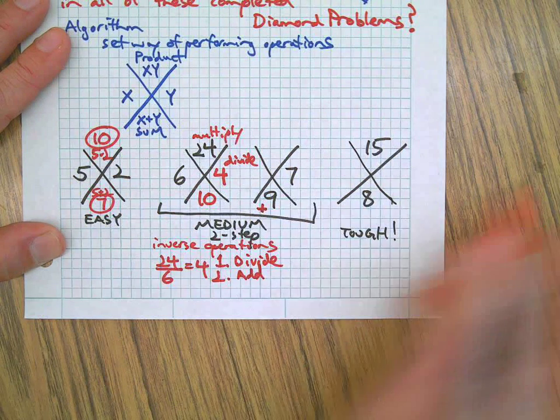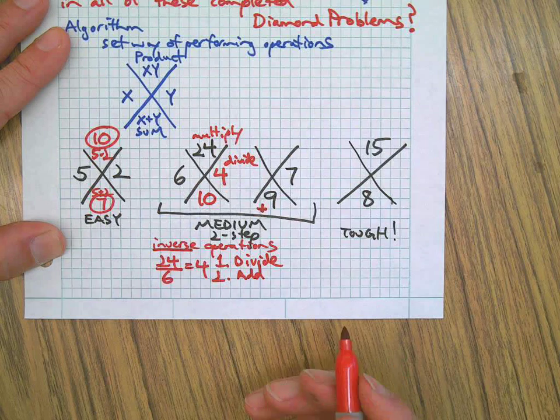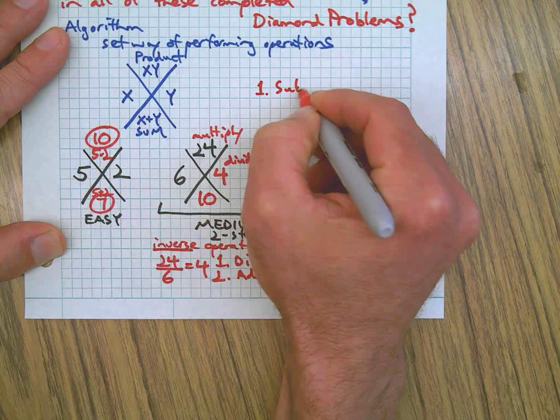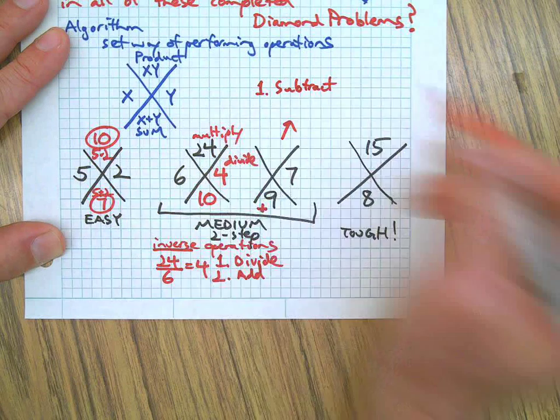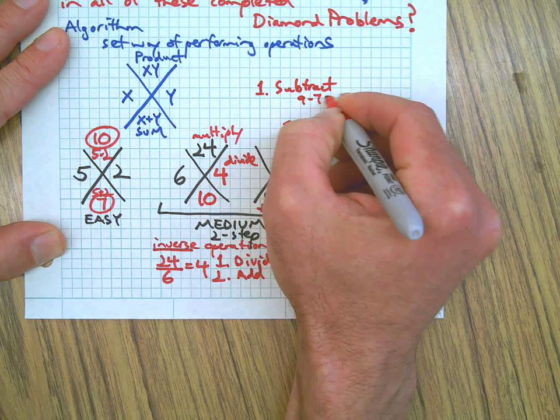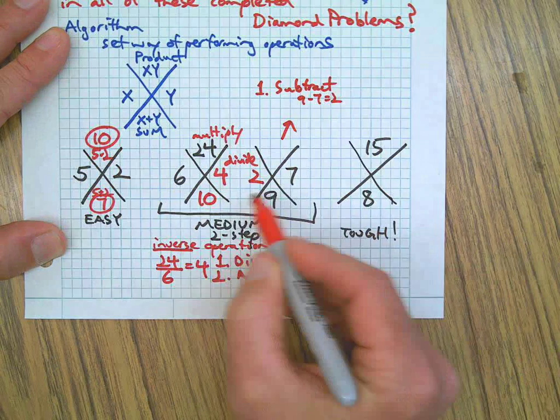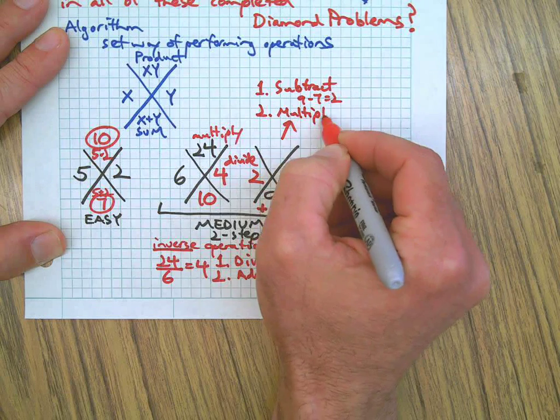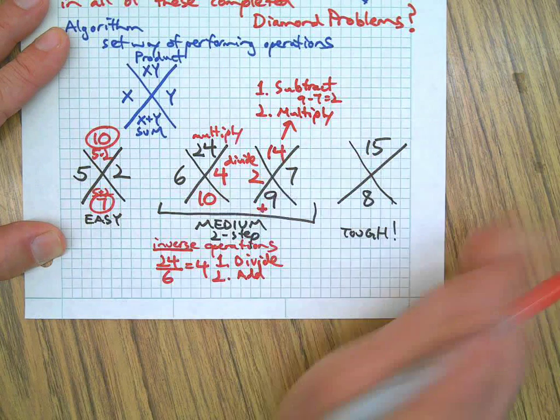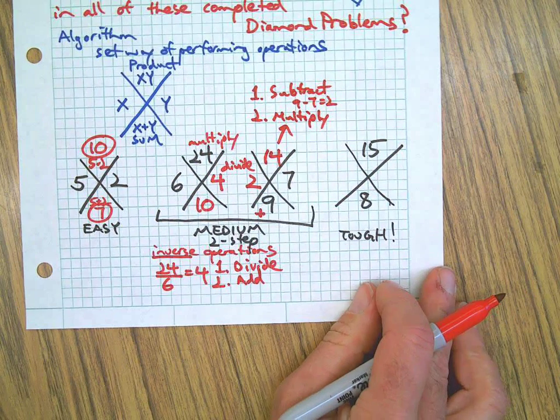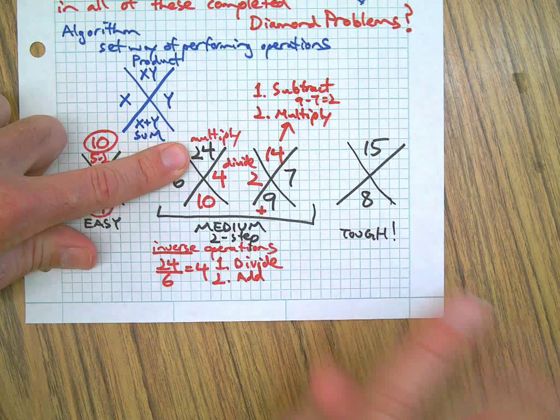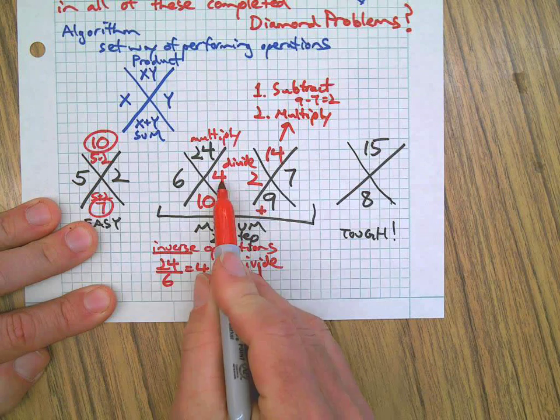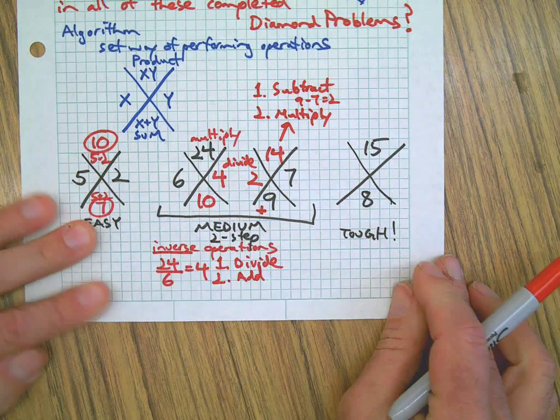And then step two is add. 6 plus 4 is 10. Now this one here, we've got the sum on the bottom, which means you added to get there. So what is that inverse operation? It's subtraction. So on this one, step one is going to be subtract. In this case we're going to do 9 minus 7 equals 2, that gives us that. And then obviously I can do the 2 times 7 to get 14. So on the medium ones, that's where you have one of the side numbers and either the product or the sum, and you're going to use inverse operations to figure out the other number on the side, and then you'll complete the missing number.